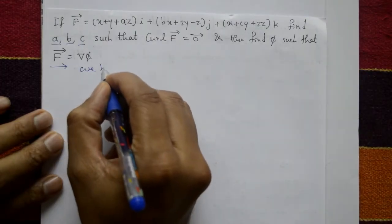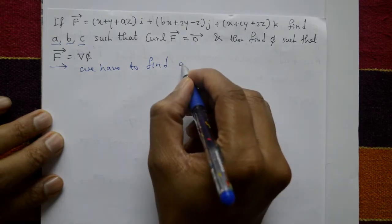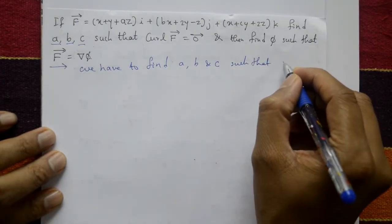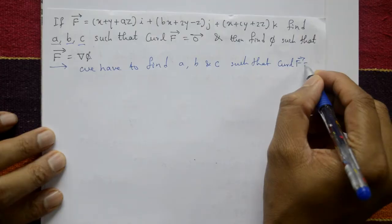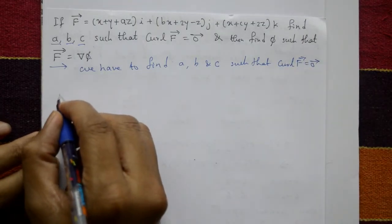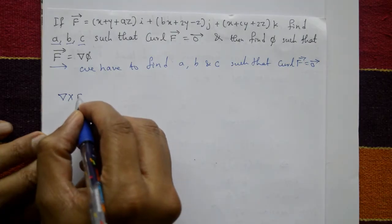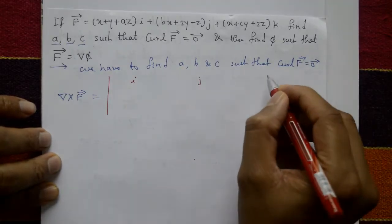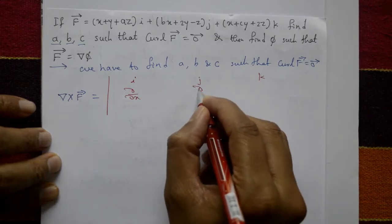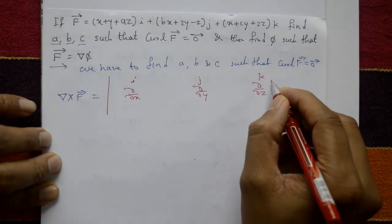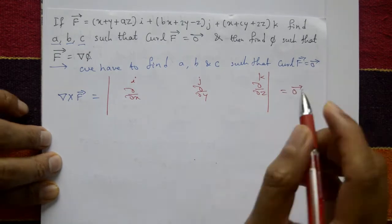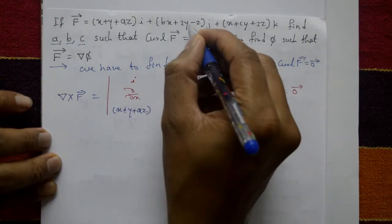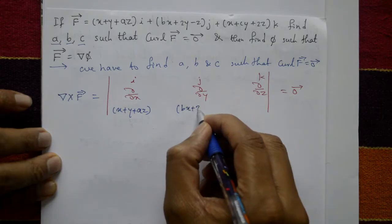First we have to find the values of a, b, and c such that curl F equals zero. Curl F means del cross vector F, which is expressed as a determinant with i, j, k in the first row, partial derivatives in the second row, and the components of F in the third row, set equal to zero.